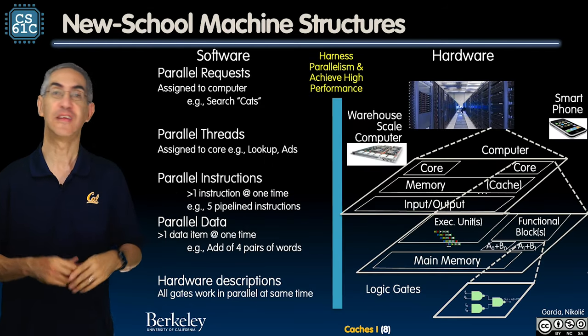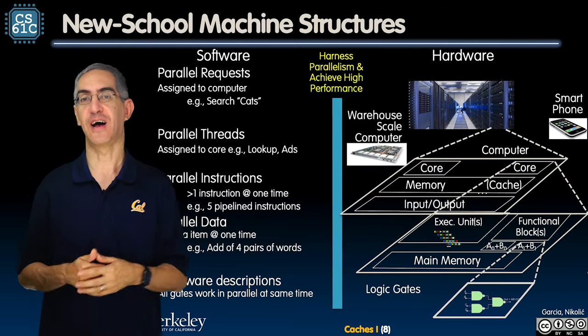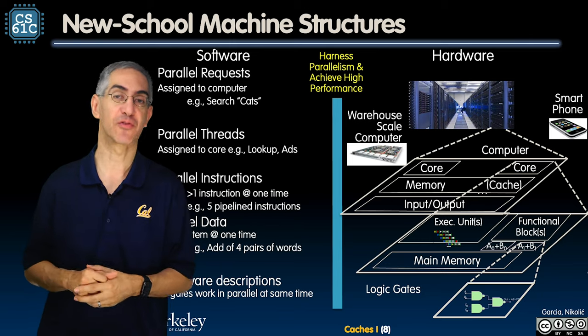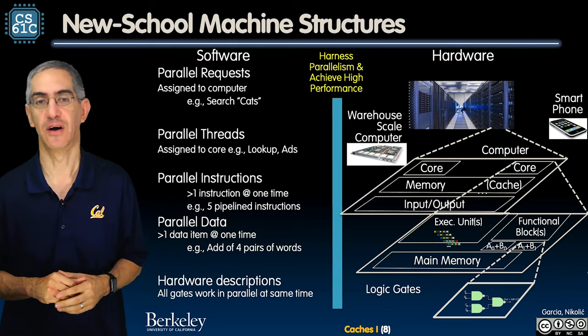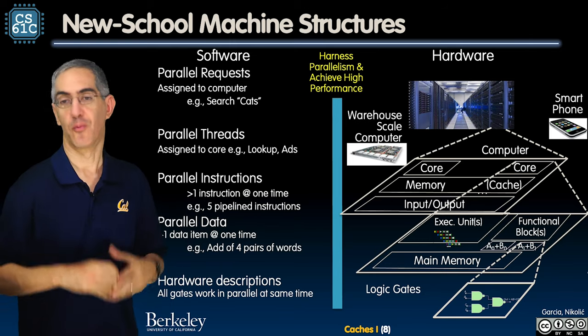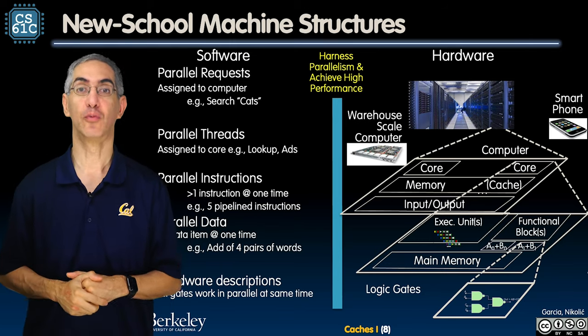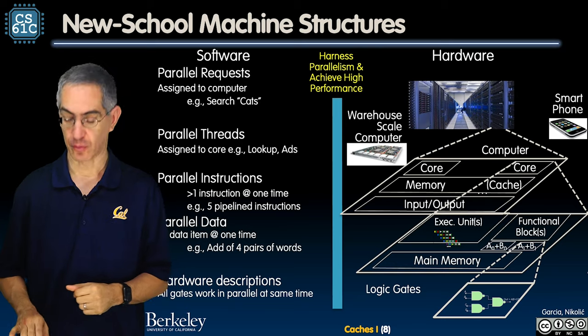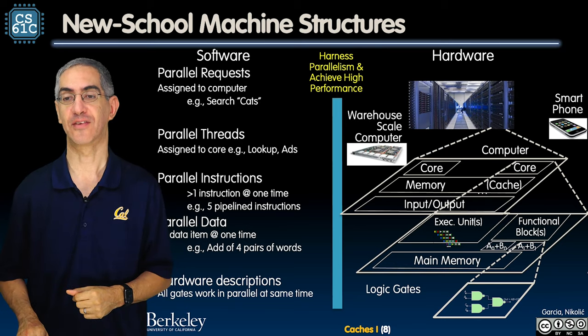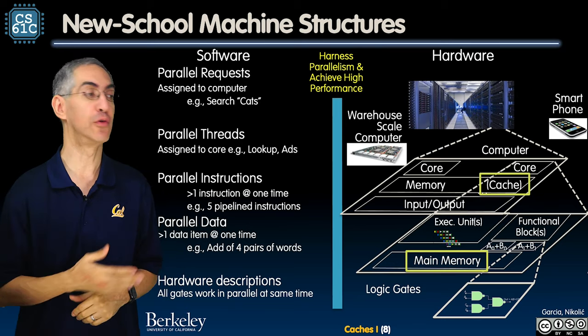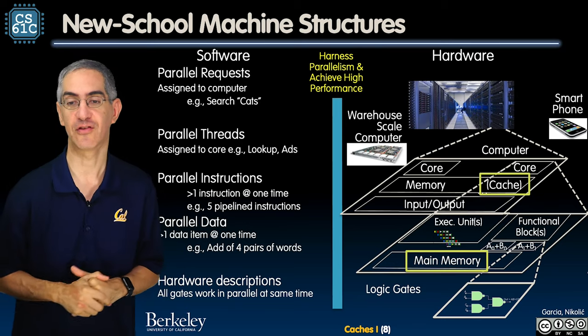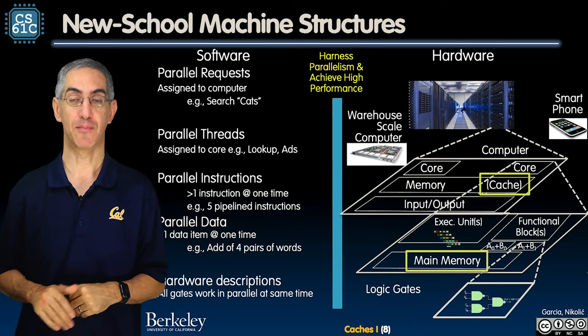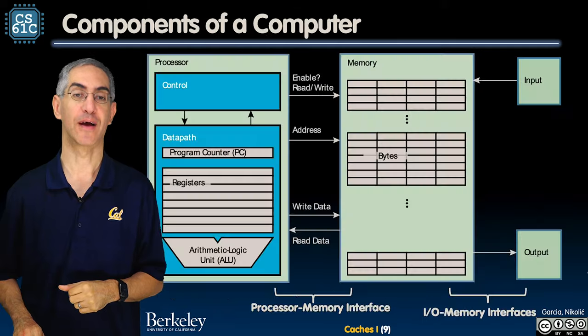Here's the big picture — you've seen this before. This is the high-level abstraction layer of why this is the new school machine structures class, not just the old school machine structures class. Today we're looking at caches and main memory and how they interact.